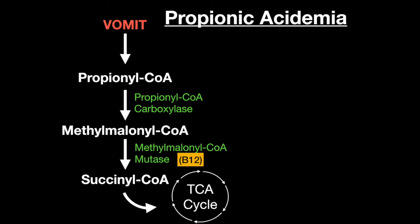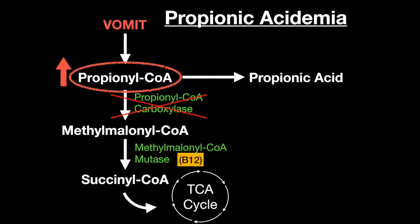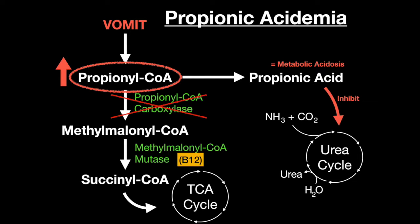Propionic acidemia is caused by a deficiency of propionyl-CoA carboxylase. This increases the amount of propionyl-CoA and decreases the amount of methylmalonyl-CoA. The propionyl-CoA will instead get converted to propionic acid, decreasing the pH and causing metabolic acidosis. Propionic acid also inhibits the urea cycle, giving rise to hyperammonemia.